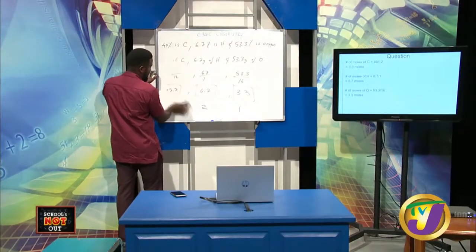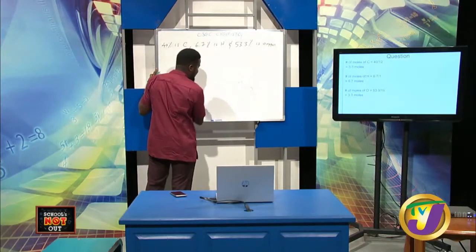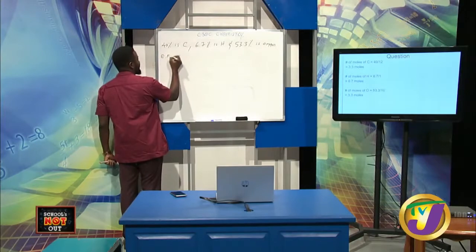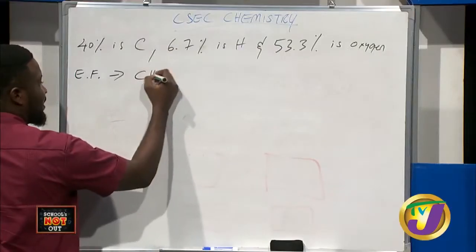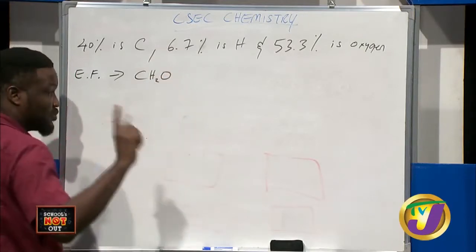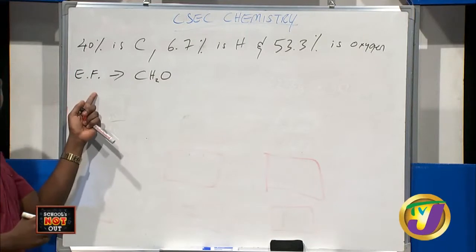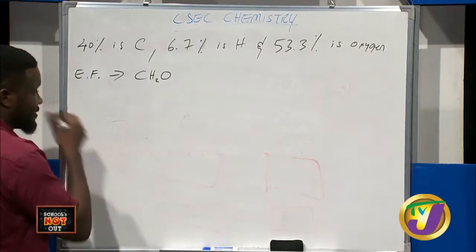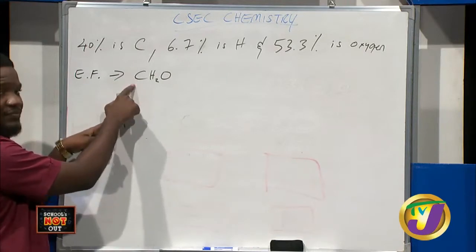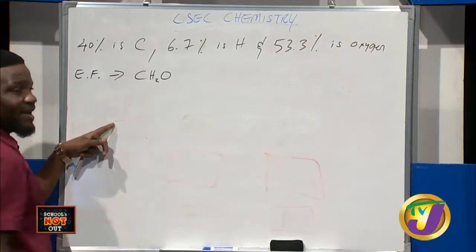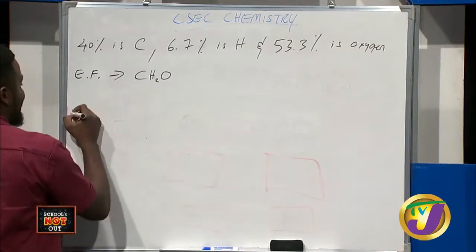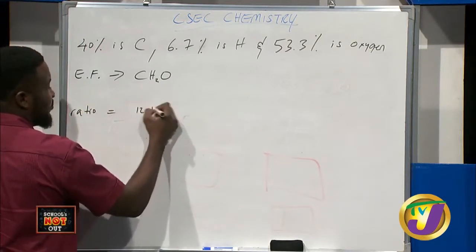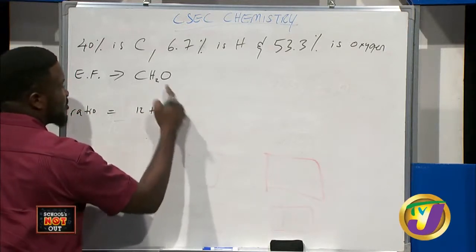So carbon is 1, hydrogen is 2, oxygen is 1. The empirical formula is CH₂O. But the question asks for the molecular formula, so we need the molar mass ratio. We add up all elements in the empirical formula: carbon = 12, plus 2 hydrogens = 2, plus oxygen = 16, giving 30. Then divide by the compound's molar mass: 30 ÷ 180 = 6. Wait — the empirical formula molar mass is 30, divided into 180 gives a ratio of 6.